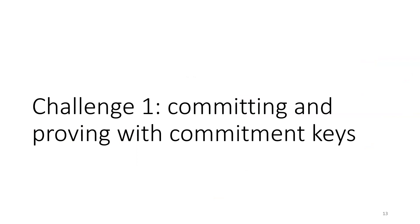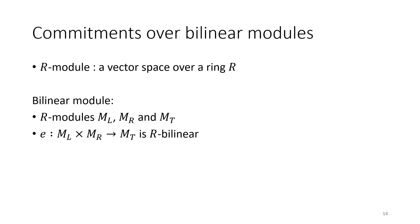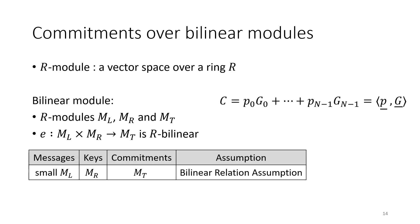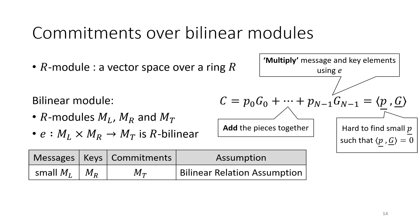First, we deal with the challenge of committing and proving about commitment keys. A commitment scheme over a bilinear module works as follows: we have modules ML, MR, and MT with a bilinear map E. We commit to small elements from the left module by taking a key from the right module, multiplying message and key elements together using E, and adding everything up to get a single element of MT. This commitment is binding under the assumption that it's hard to find small elements from ML that give zero.